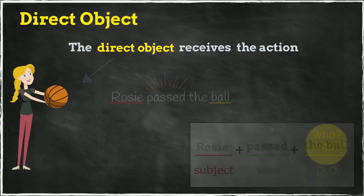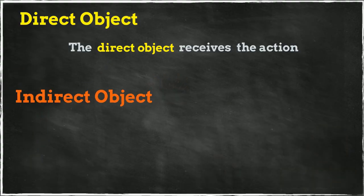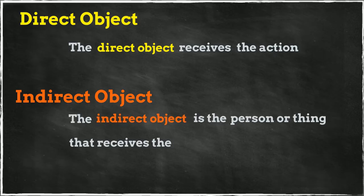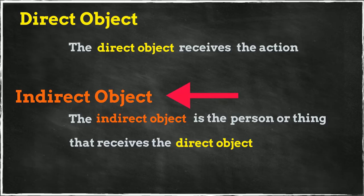So, what is an indirect object? An indirect object is the person or thing that receives the direct object. This means that for a sentence to have an indirect object, it must have a direct object.